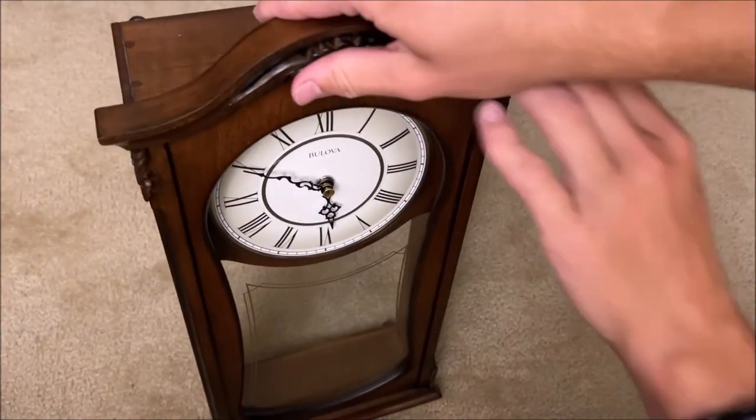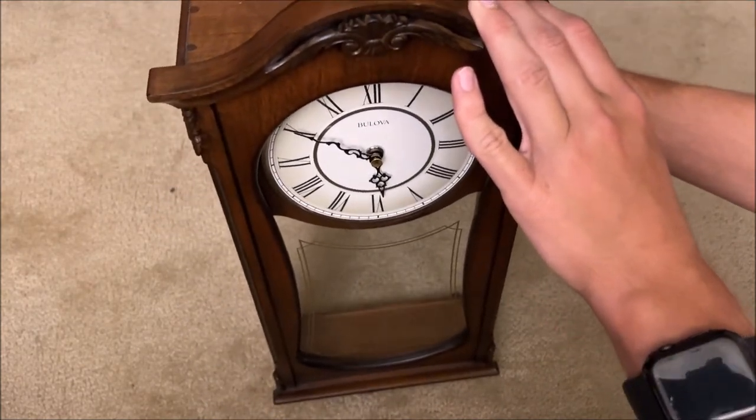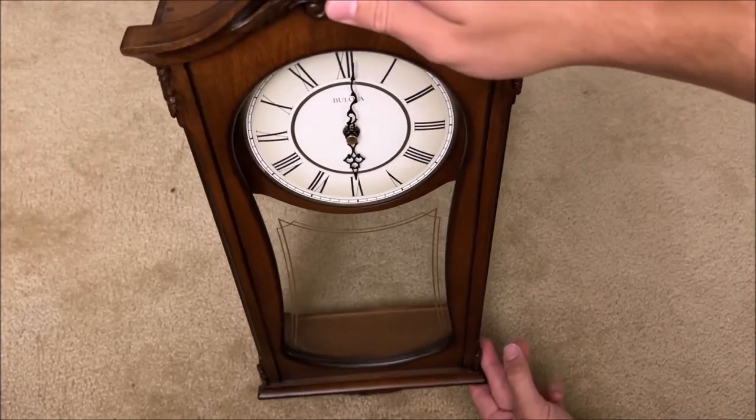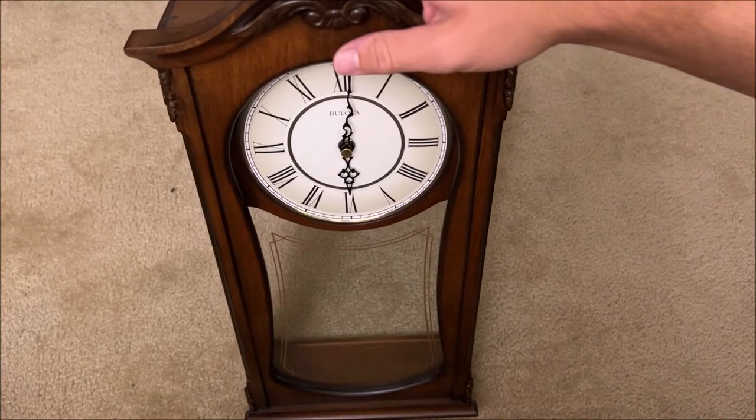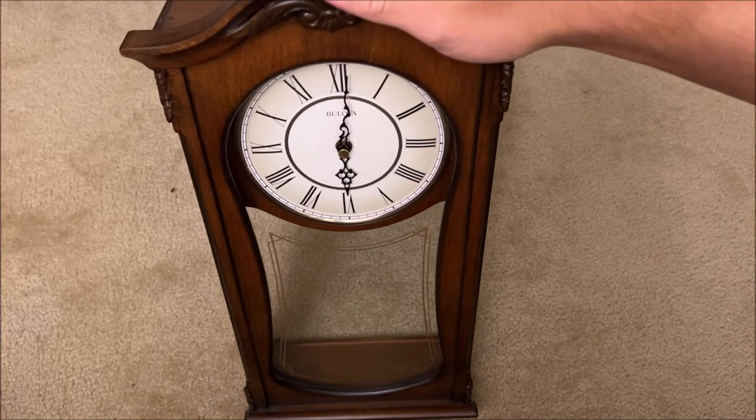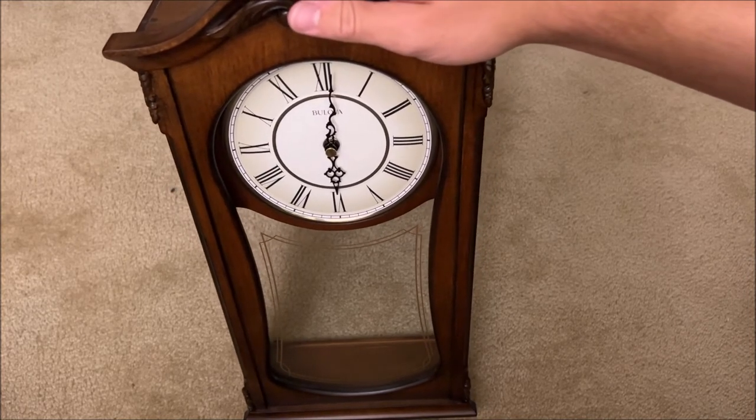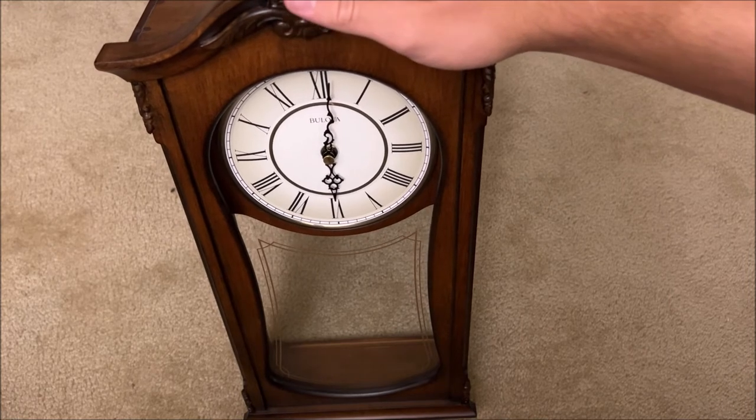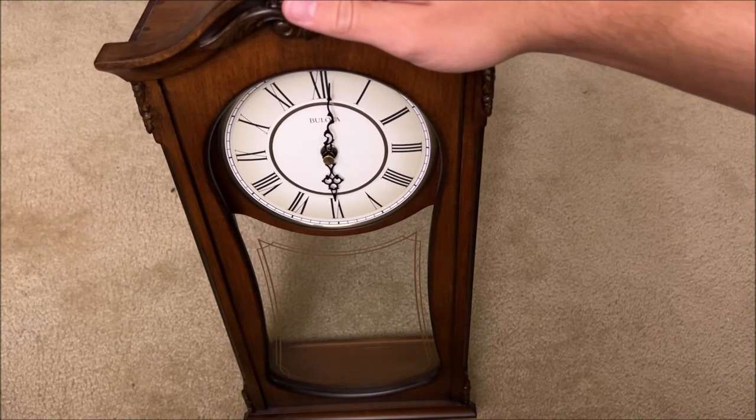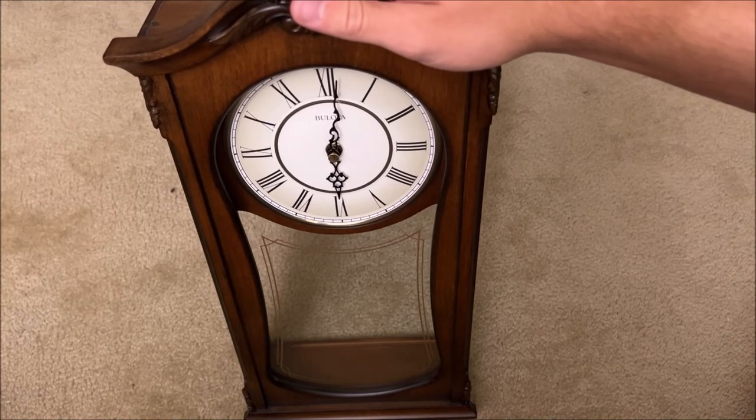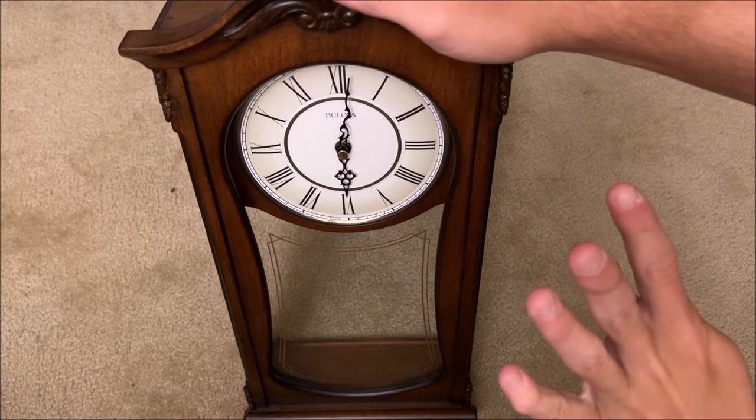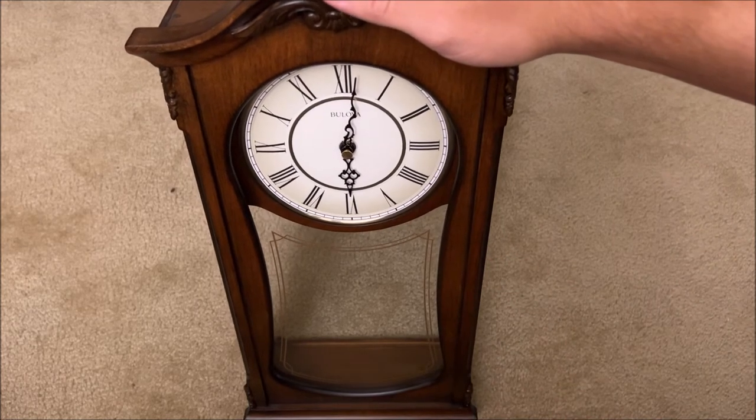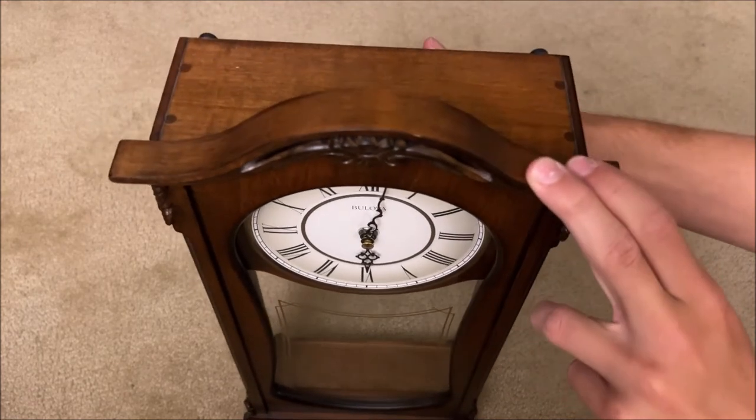So when I turn the hands again I'm going to turn the hand up to 6 o'clock. Should chime 6 o'clock. Six chimes. Perfect. So it's now back on the right amount of chimes.